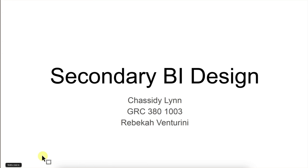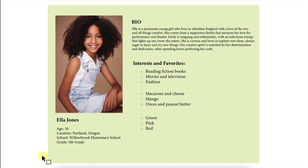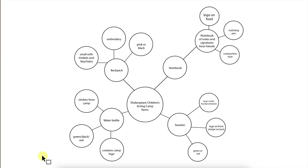Next up is Chassidy. Good looking first slide there. Thank you. Next up, we have your persona. This looks really good — I love her interests and your description of her. Oreos and peanut butter — sounds like a girl after my own heart. So here is your little mind map. It looks like the things you were focusing on are water bottles, backpacks, notebooks, and sweaters.